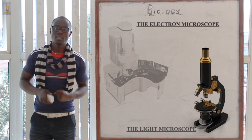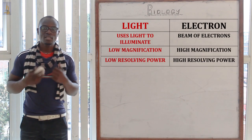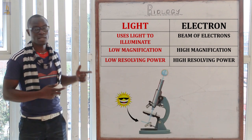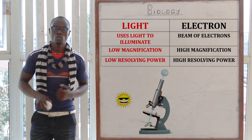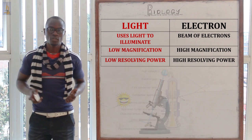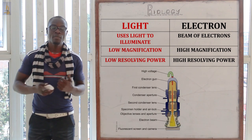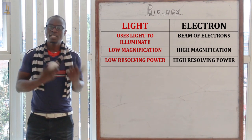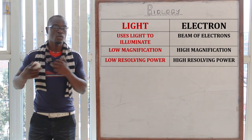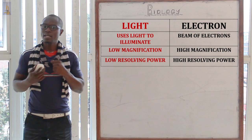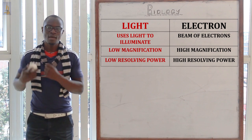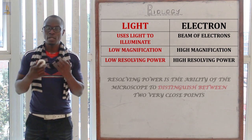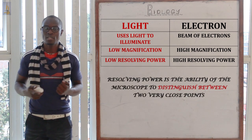The light microscope uses light to illuminate the specimen — light bounces through the mirror onto the stage. The electron microscope uses a beam of electrons to illuminate the specimen. The light microscope has very low magnification while the electron microscope has very high magnification.